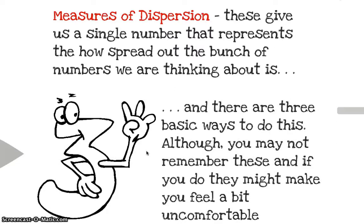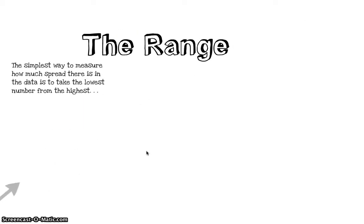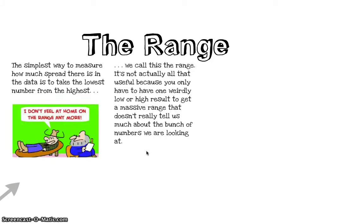And again, we've got three basic ways to calculate the spread in the data. You might not remember these quite so well. So here's the range: the simplest way to measure how much spread there is in our data - take the lowest number away from the highest. It's called the range. It's not actually all that useful, sadly. You've only got to get one weirdly out there result at the top end or the bottom end, and suddenly the range looks massive when actually most of the numbers fall within a much smaller amount.